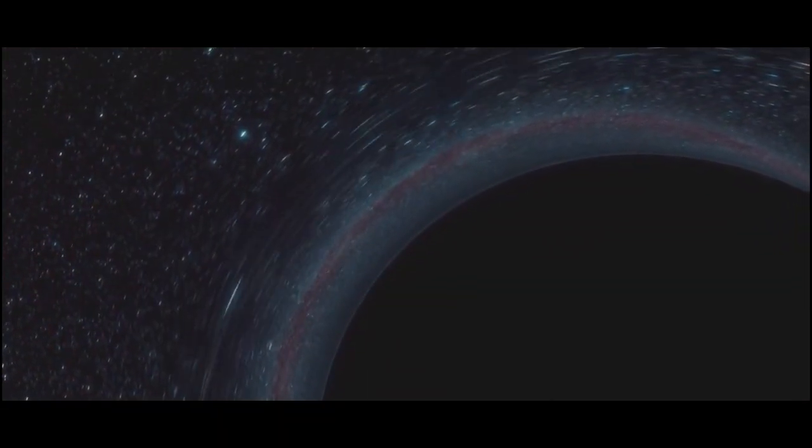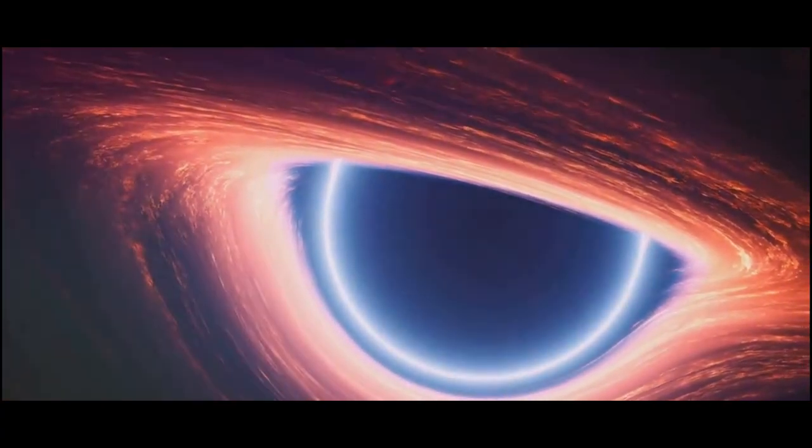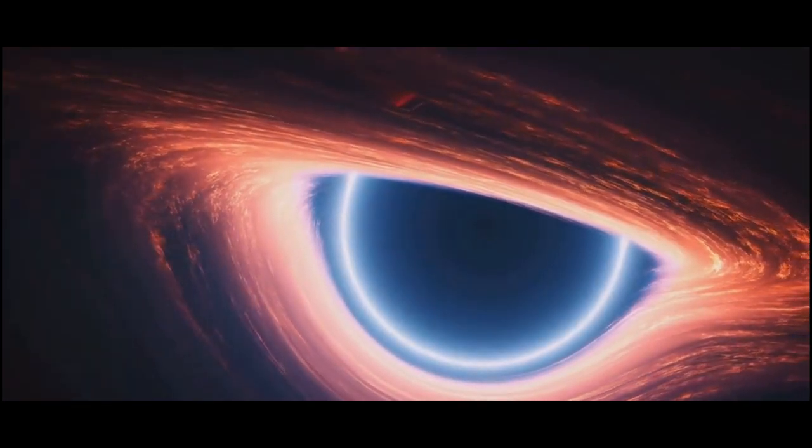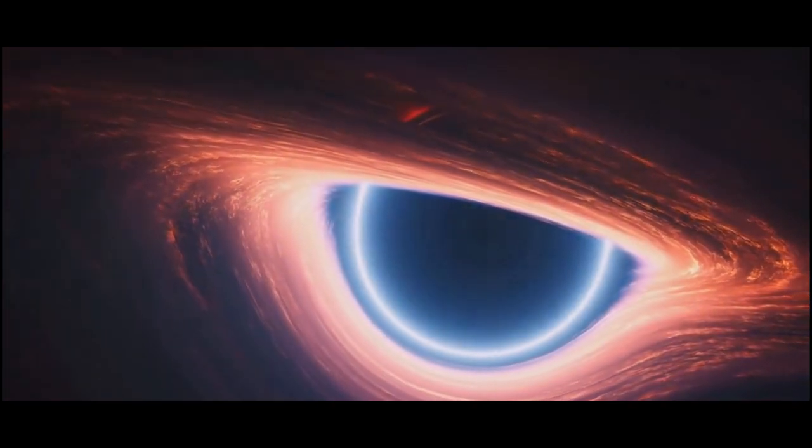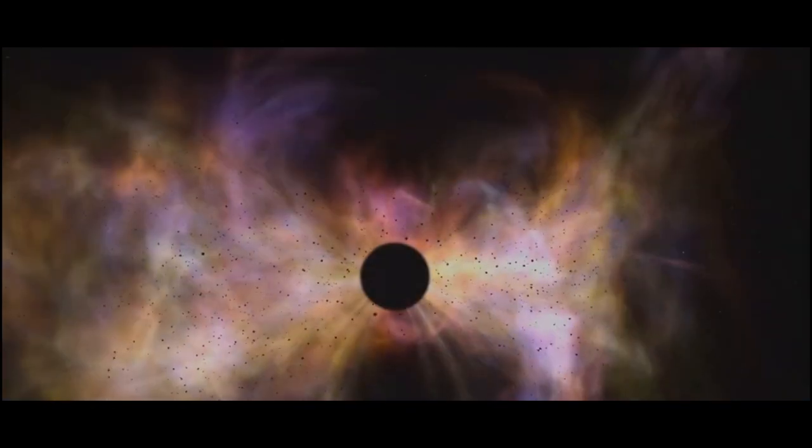Surrounding this singularity is the event horizon, a boundary beyond which nothing, not even light, the fastest thing in the universe, can escape the gravitational pull of the black hole. It's like a point of no return. Once something crosses the event horizon, it's lost to the black hole forever. This is why we can't see black holes. They don't allow light to escape. Now you might wonder, how can we study something we can't see?